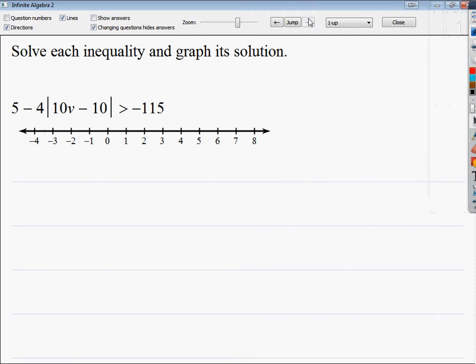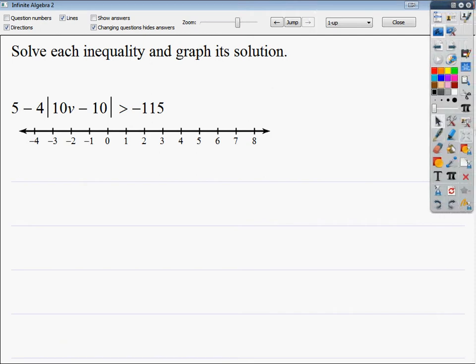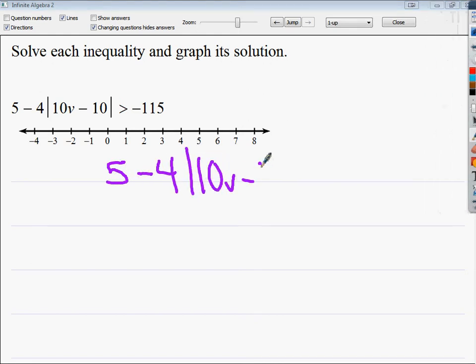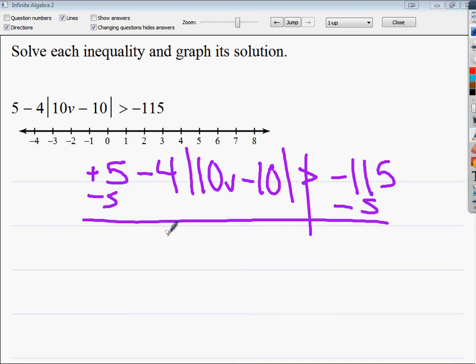This one is basically the same thing, but once again, you have to make sure that you get the absolute part to be absolute. So I have 5 minus 4 times the absolute value of 10b minus 10 is greater than negative 115. This is one of the longer ones. Once again, I can't combine these together, or I can't distribute. I also can't combine these together because the 4 is being multiplied here, so it means it's off limits. It's almost like saying 5 minus 4 times the quantity, so I can't do that yet. Instead, I need to get rid of the 5 in the same way I would do it if it was a standard equation.